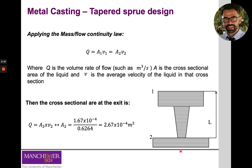This is a good example of how we can use the Bernoulli theorem and the law of mass continuity to design sprue geometry in order to prevent aspiration of either solid particles or gases. This is extremely important in order to avoid the generation of defects such as porosity, which can be very detrimental to the mechanical performance of casted parts. Many thanks for listening, and I will see you on Tuesday.